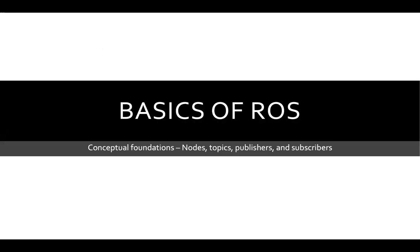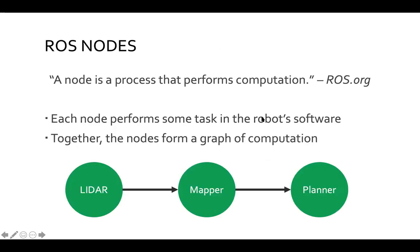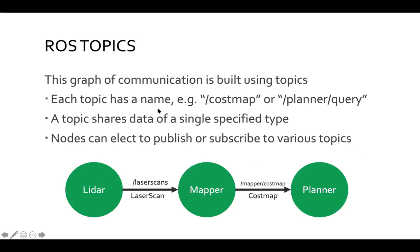ROS works with the idea of nodes that communicate through topics. Nodes can either publish or subscribe to these topics. A node is a process that performs computation — each node sits there, performs some tasks in the robot software, and together these nodes form a graph of computation via topics. Each topic has a name — often named what they're sending, like cost_map or planner queries — and shares data of a specific type. Multiple topics can send the same data type, so names are informative.